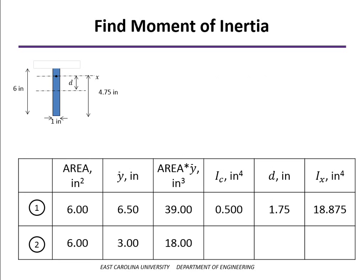We move to the web and the moment of inertia about its own centroidal axis, 1/12 bh³. The base in this case is 1 and the height is 6. So that comes out to be 18 inches to the 4th.